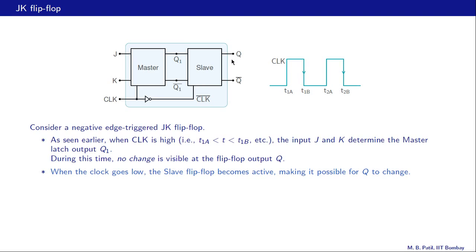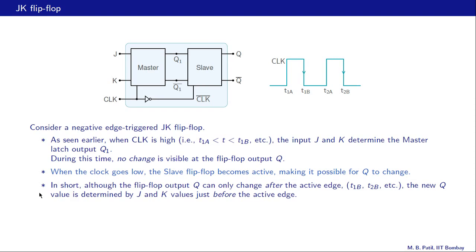When the clock goes low, the slave flip flop becomes active; the master no longer allows changes to Q1. The change that occurred in Q1 during the clock-high phase is now transferred to the slave output Q. In short: although the flip flop output Q can only change after the active edge, the new Q value is determined by J and K just before that active edge—just before t1b or t2b. This is an extremely important point to remember when working with JK flip flop circuits.